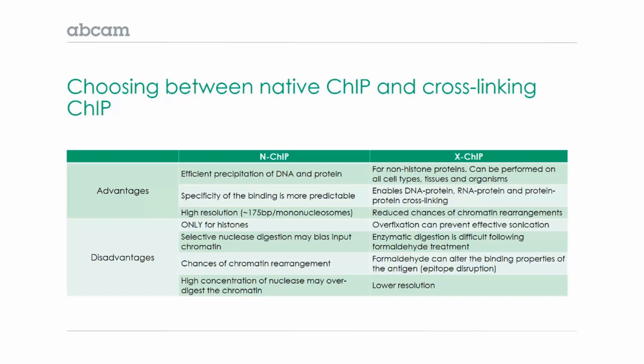With native ChIP, you typically get more efficient precipitation of the DNA and protein, as well as greater specificity because the binding is more predictable. You also have higher resolution, as low as a single nucleosome, compared to 200 to 1,000 base pair fragments you get with sonication.